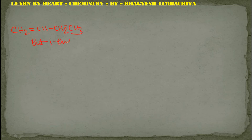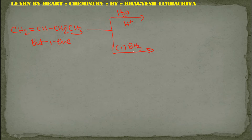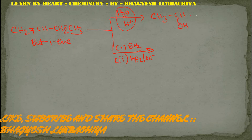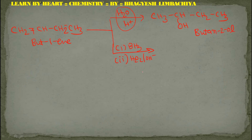Suppose we take but-1-ene. Same way, first reagent is H2O with H+, and second is BH3 followed by H2O2/OH-. If this reagent (hydroboration) is used, OH comes on the inner side and H on the outer side, so the product is butan-2-ol.